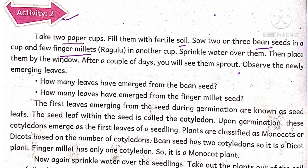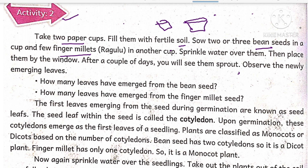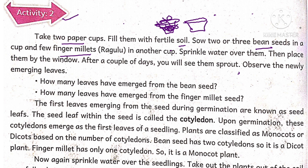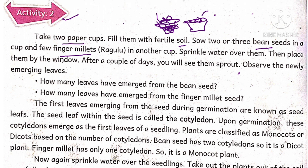Take two paper cups and fill with fertile soil. Sow two or three bean seeds in one cup, and sow a few finger millets in another cup. Then sprinkle the water.